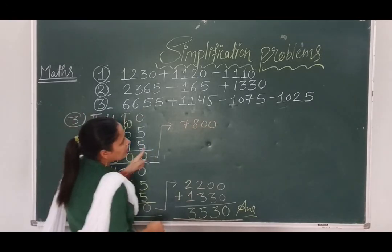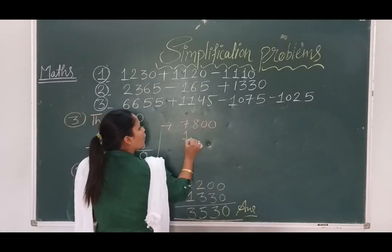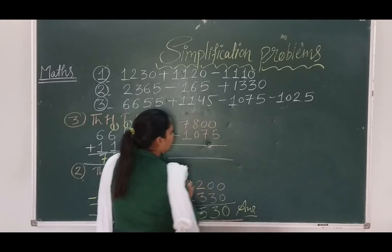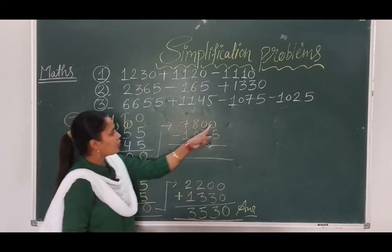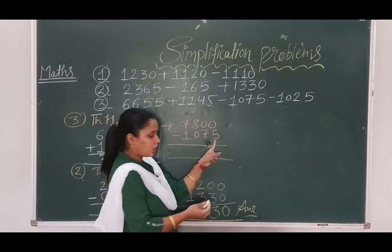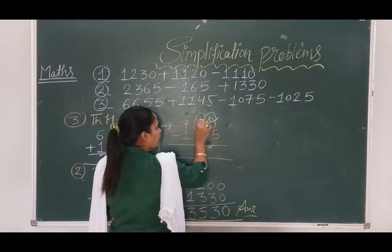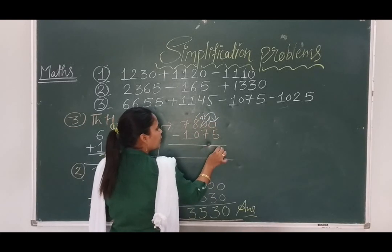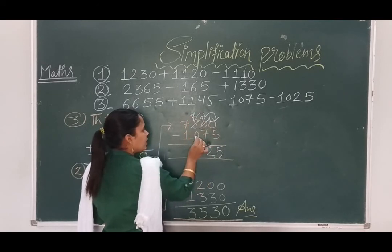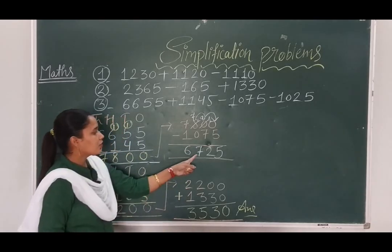Our next step is subtraction, then again subtraction. We write the number 1075. Now, 0 minus 5 is not possible, so we borrow — making it 10. After borrowing, 7 minus 1 is 6. The intermediate result is 6725, with one digit remaining for the next step.